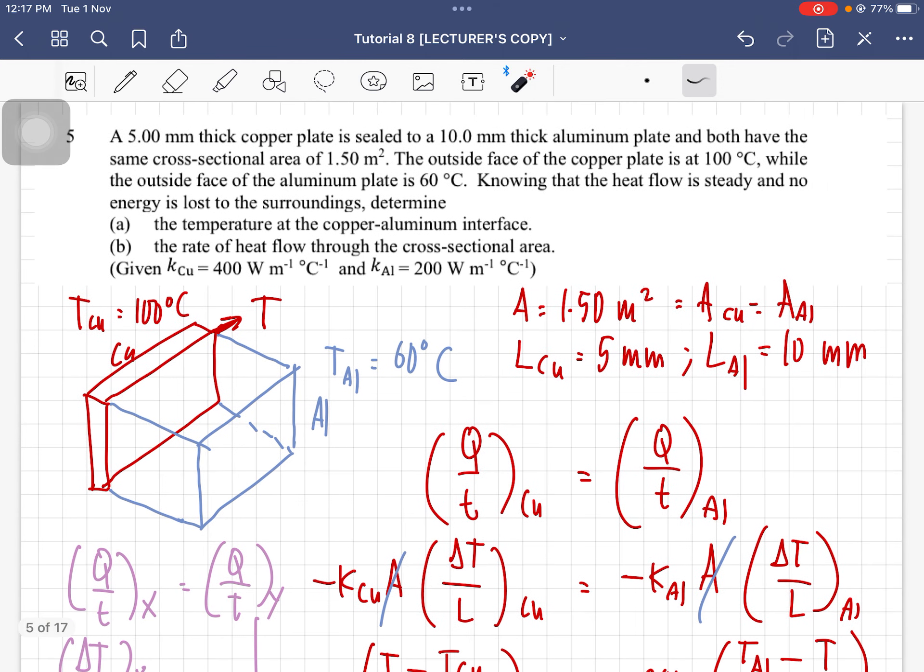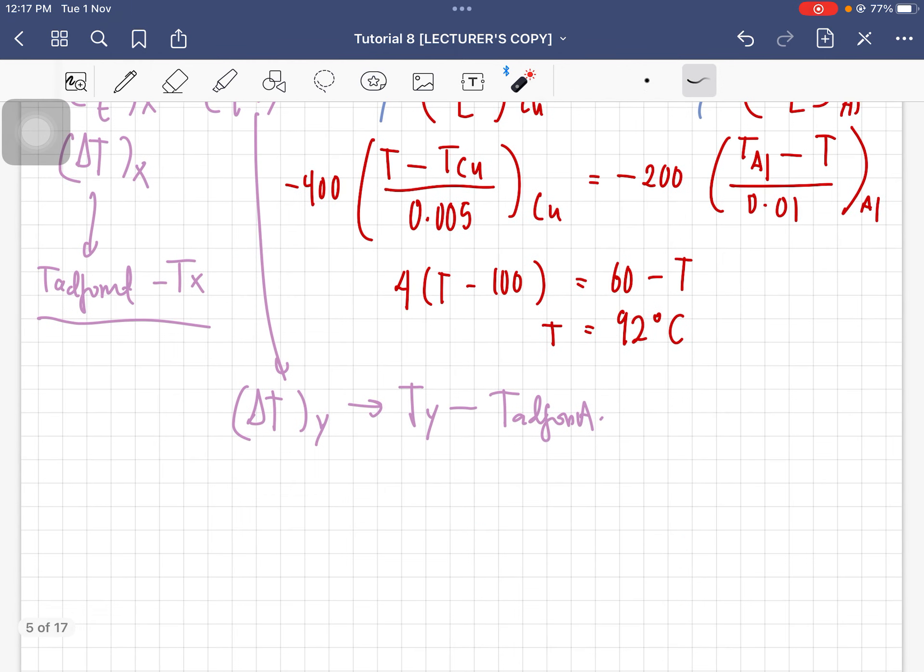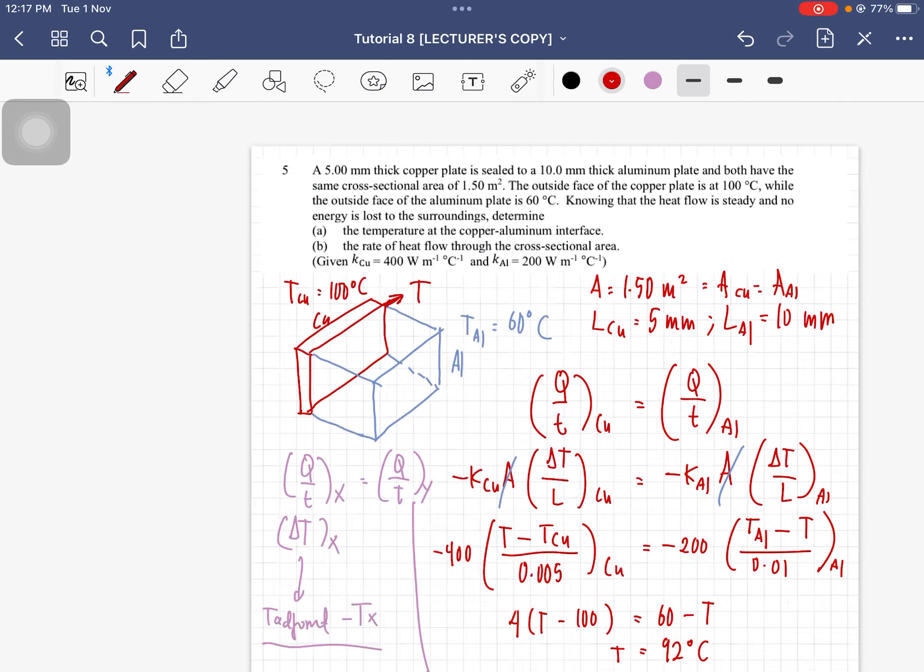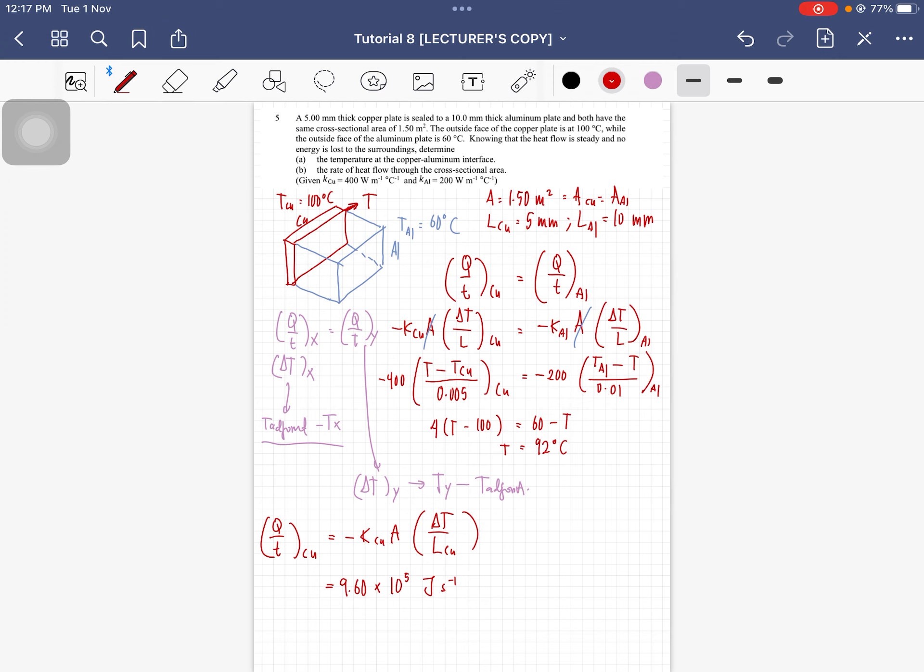Question B: since they have the same rate of heat flow, you can just choose either one of it. So let's just choose copper, negative K copper A delta T over L for copper. You will get 9.6 times 10 to the power 5 joule per second. Joule per second means the rate of heat transfer. So that is question number 5.